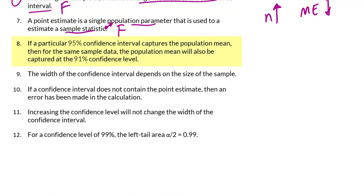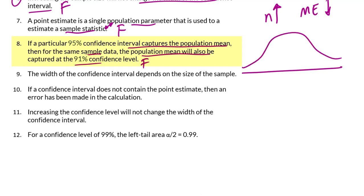Number 8: If a particular 95% confidence interval captures the population mean, then for the same data, the population mean will also be captured at 91%. That would be false because the 95% interval is wider. If the 95% interval captures the population mean, the 91% interval, which is narrower and in the middle, may not capture that population mean. If we switch 95 and 91, then the statement would be true.